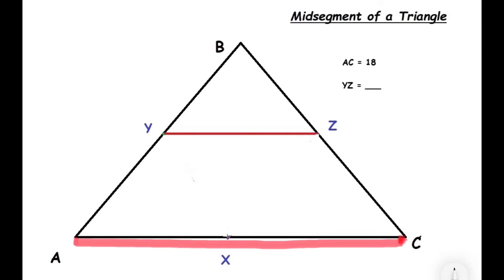Because Y is the midpoint of segment AB, that means this segment is equivalent to this segment. And Z is the midpoint of BC, that means these two segments are equal.